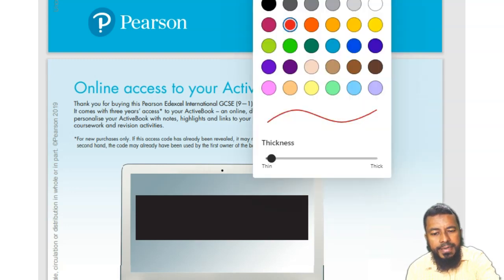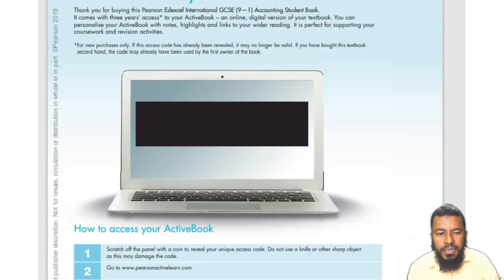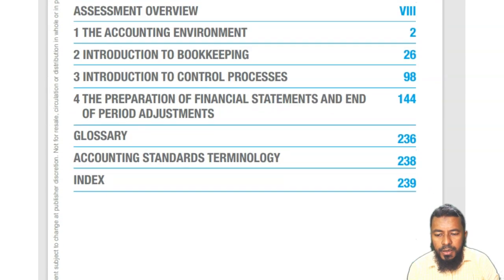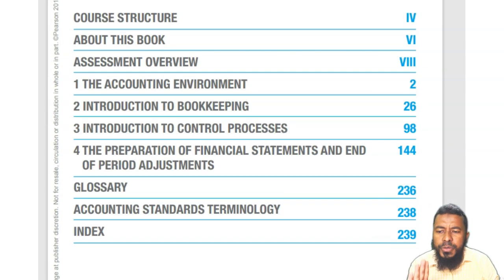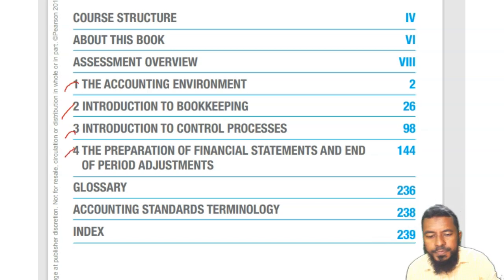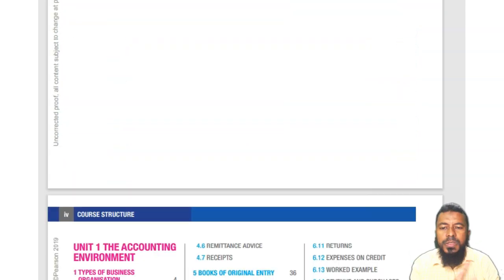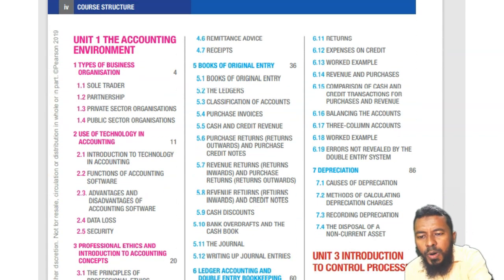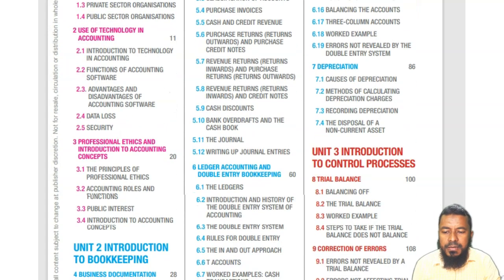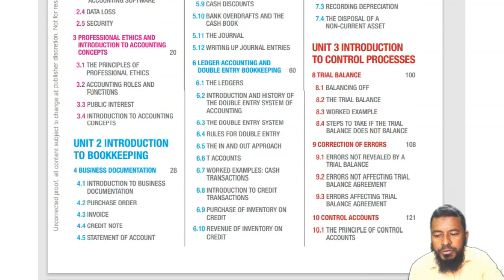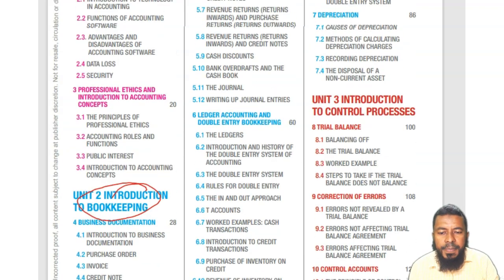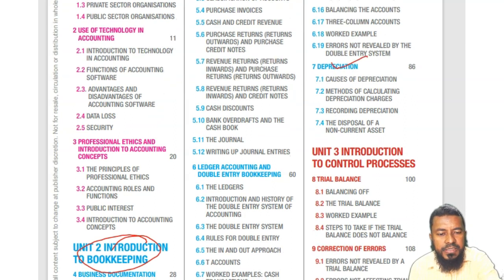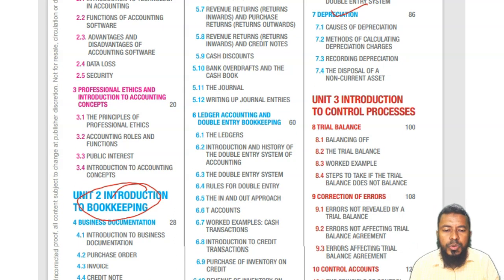There we go. The pen has been taken, so I can highlight whatever you need. Almost similar — four units are there: one, two, three, and four. And it's almost similar to Cambridge; I don't see much difference. Unit One — the accounting environment — is all about theory, just writing. Unit Two is bookkeeping, double entry, debit and credit. I have most of the videos already. This includes depreciation as well — it's a long one but a good one.